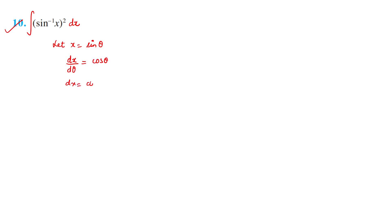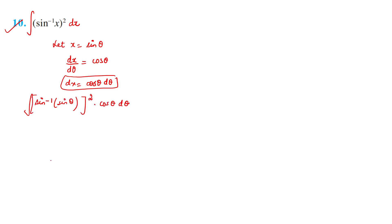Substituting: sin⁻¹(sinθ) = θ, so the integral becomes ∫θ · cosθ dθ. Wait — since the original integral is ∫sin⁻¹x dx = ∫θ · cosθ dθ. Actually collecting: we get ∫θ² cosθ dθ after checking — here we take θ² as the first function and cosθ as the second function according to the ILATE rule.